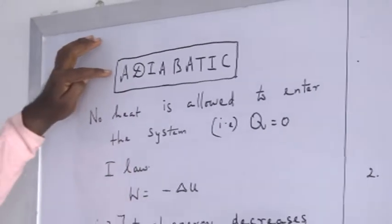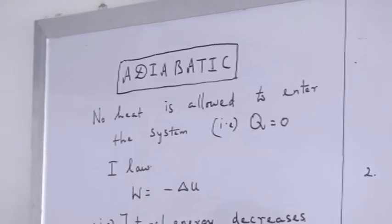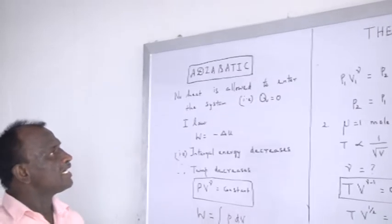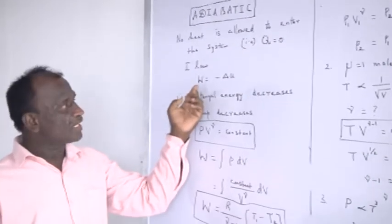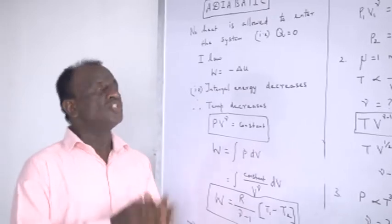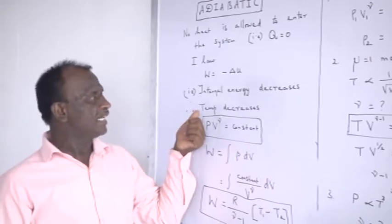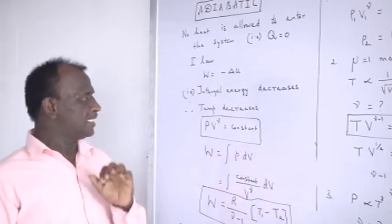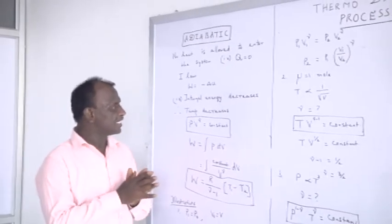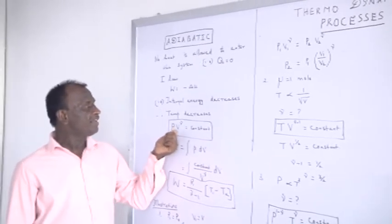The next thermodynamic process is called the adiabatic process. Unlike the isothermal process, here no heat is allowed to enter the system. Therefore, Q equal to 0. Since no heat enters the system, the entire work has to be done at the cost of the internal energy. Since internal energy is a function of temperature, once the internal energy decreases, the temperature also decreases. In an adiabatic process, work is done at the cost of internal energy, and therefore the temperature decreases. One of the equations representing an adiabatic process is PV^γ equal to a constant.